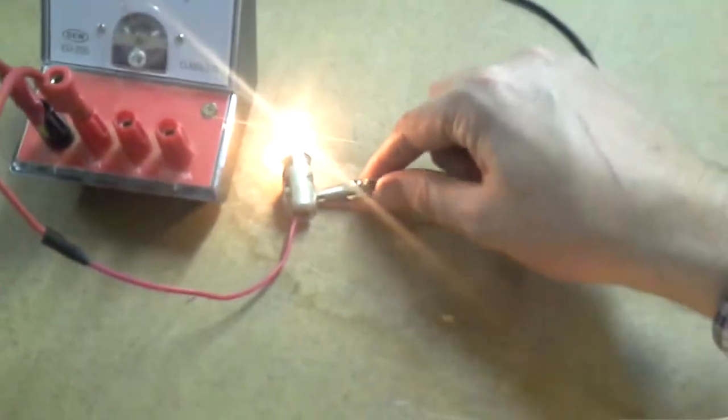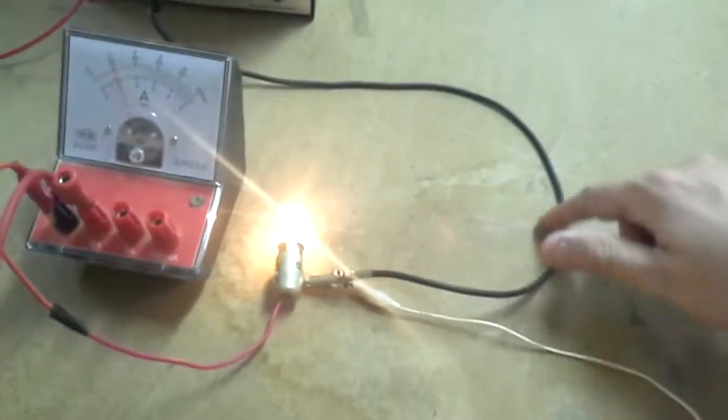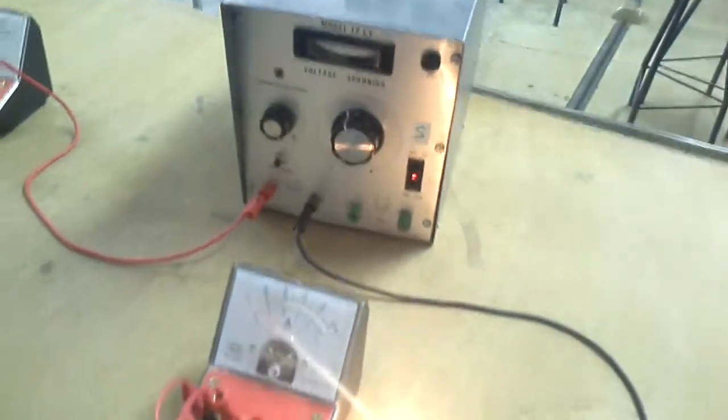Here at the second junction, we've got one amp coming in here, one amp coming from this bulb here, and we'll end up with two amps going back to our power supply. Okay, bye for now.